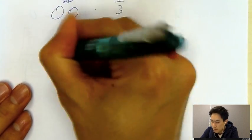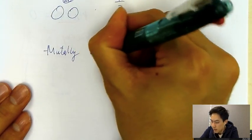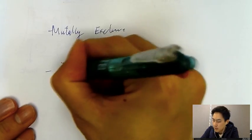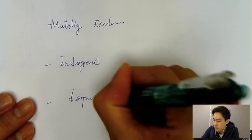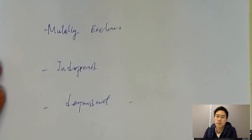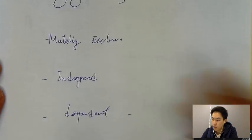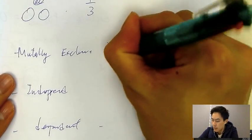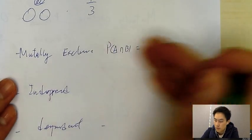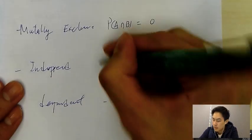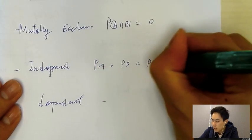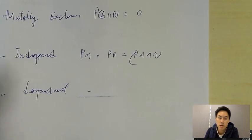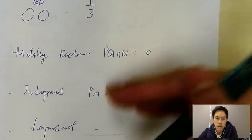Today I want to focus on three things: mutually exclusive events, independent events, and dependent events. On your data booklet you'll see P(A∩B) = 0 for mutually exclusive events, and P(A)×P(B) = P(A∩B) for independent events. For dependent events, there is no equation.